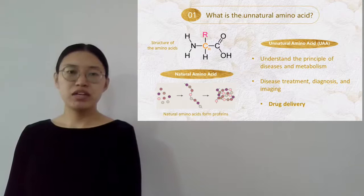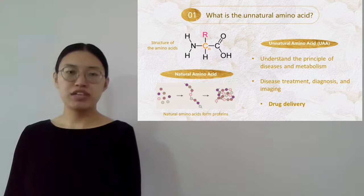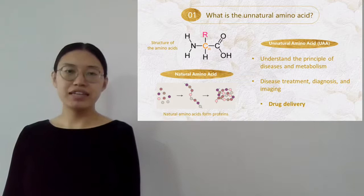That is why we are now developing unnatural amino acids, or UAAs. UAAs are called so because their side chains, shown as the pink R in the structure of the amino acid, are unnatural. Those diverse side chains have many novel functionalities.